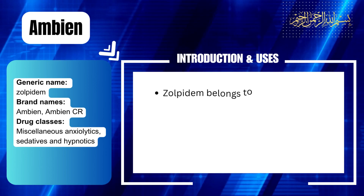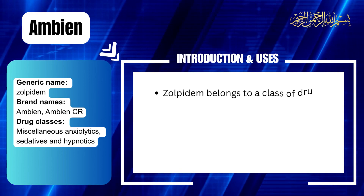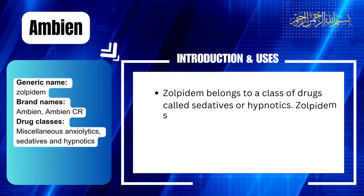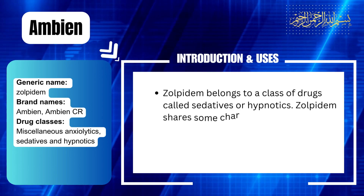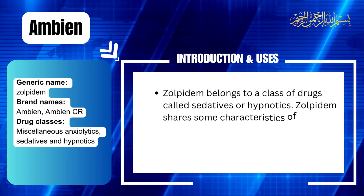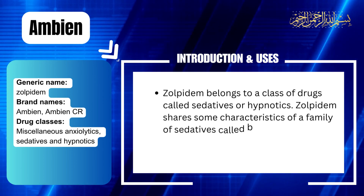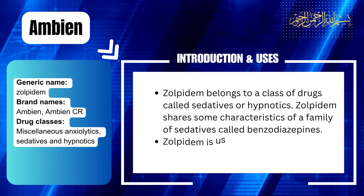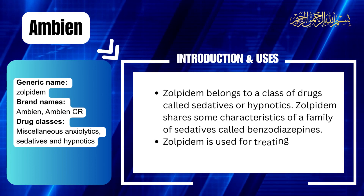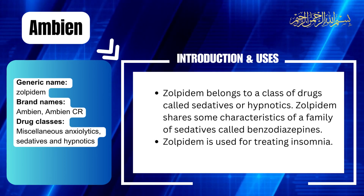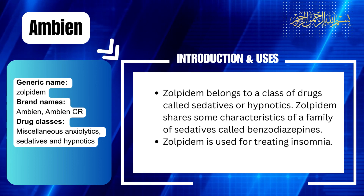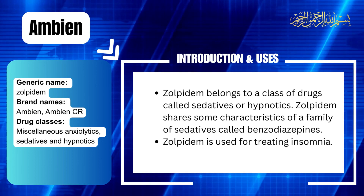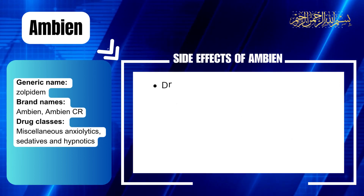Zolpidem is used for treating insomnia. Conventional tablets are used for short-term treatment of insomnia associated with difficulty falling asleep. Long-acting tablets are used for treating insomnia associated with difficulty falling asleep or staying asleep. Zolpidem improves initiation of sleep and keeps patients asleep longer.